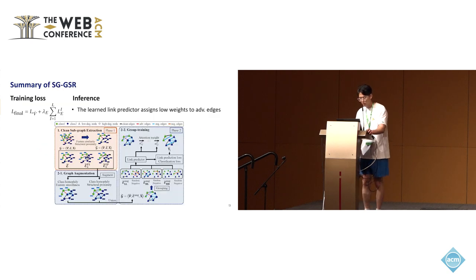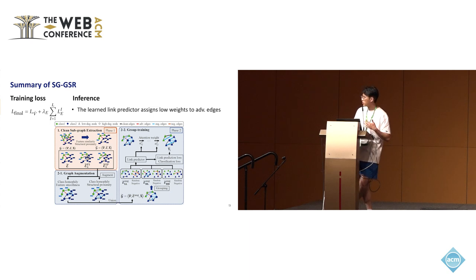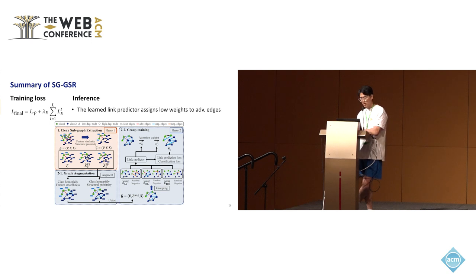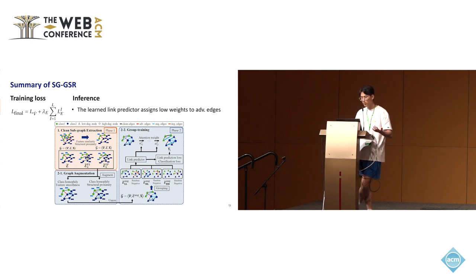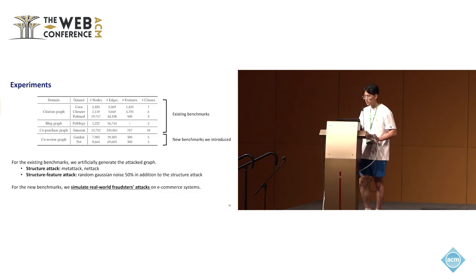To summarize: first, we extract the clean subgraph from the attacked graph; second, we observe two technical challenges; and to mitigate them, we propose graph augmentation and a group training strategy. For inference, given the attacked graph, the learned link predictor assigns low weights to adversarial edges.